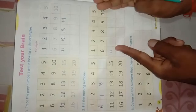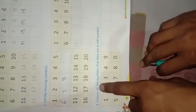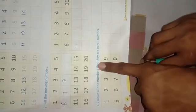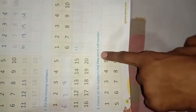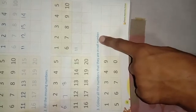Fill in the missing number. Question number 3: color all the numbers that they are in row number.